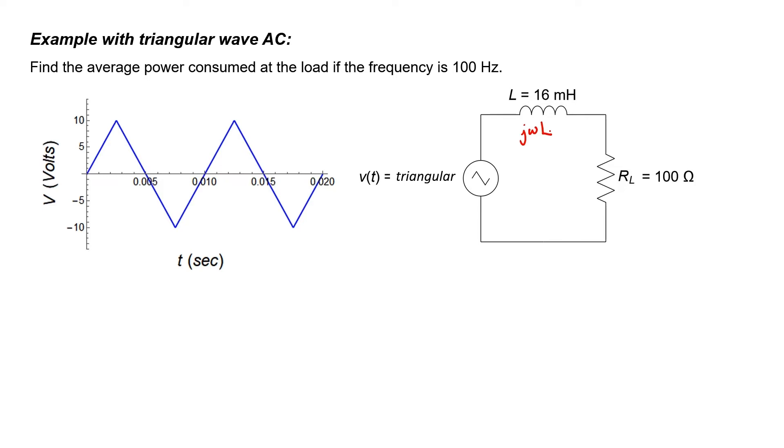But a triangular wave doesn't have just a single frequency. It can be represented as a Fourier series — an infinite sum of many different sine waves, each at a different frequency and a different amplitude. Our strategy for solving this problem is going to be to decompose this triangular wave into its Fourier series, solve the circuit component by component or frequency by frequency, and then use superposition to sum up all of the voltages across the load resistor.